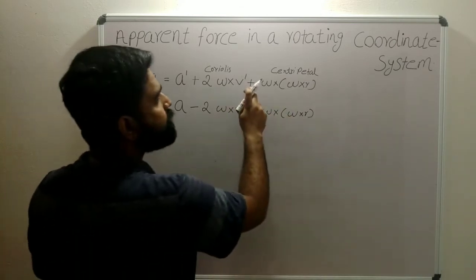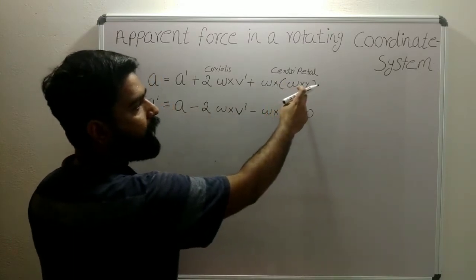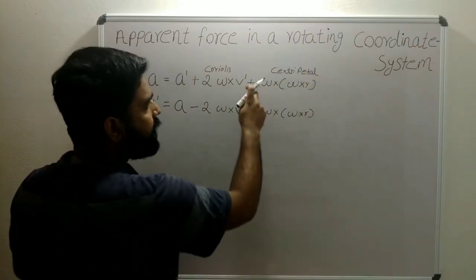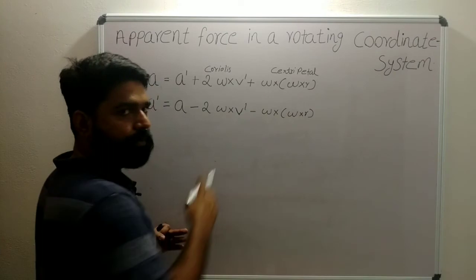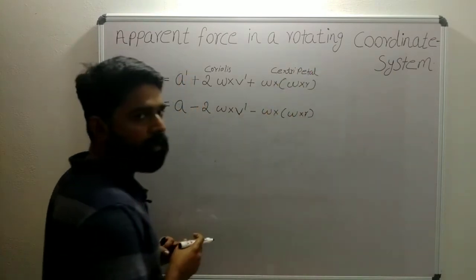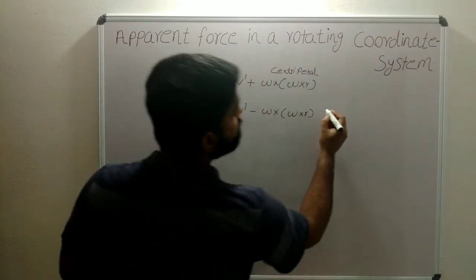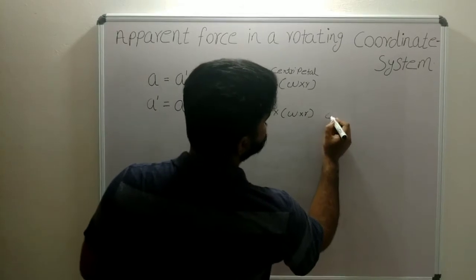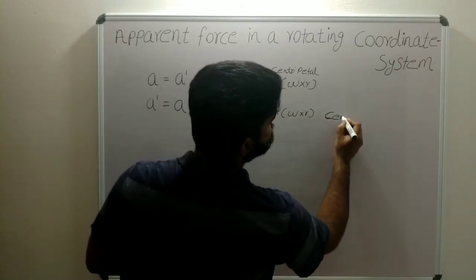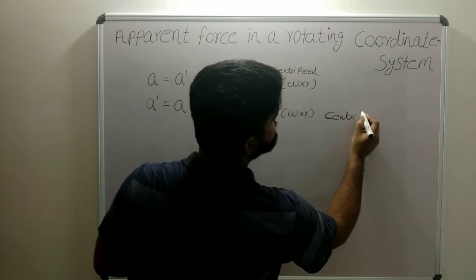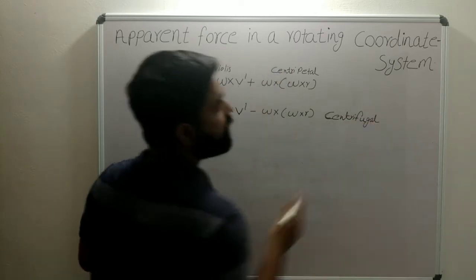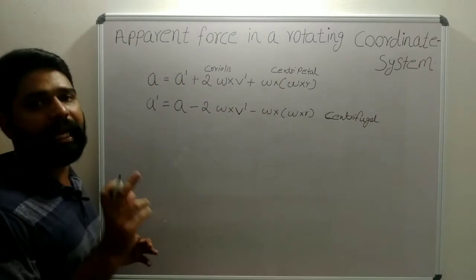Here, the term ω×(ω×r) is centripetal acceleration, but in this rearranged equation it is negative — so it is just opposite to centripetal. That negative term is centrifugal acceleration.